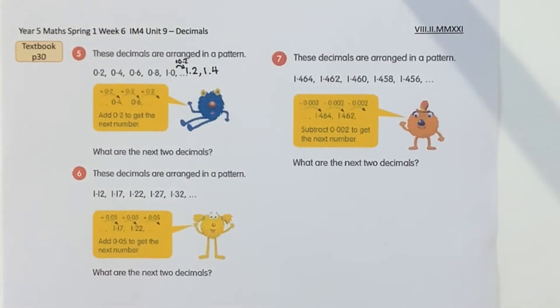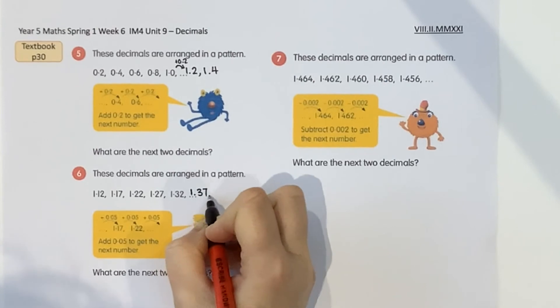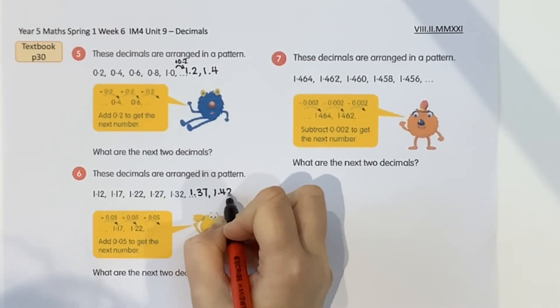Let's have a look at number 6. This time we've got 1.12, 1.17, 1.22, 1.27, 1.32. So this time if you have a look at what's changing each time, we're getting 0.5 bigger each time. So we need to keep going. Can you tell me what the next two decimals are going to be? Okay, hopefully you've spotted it's going to be 1.37 and 1.42.